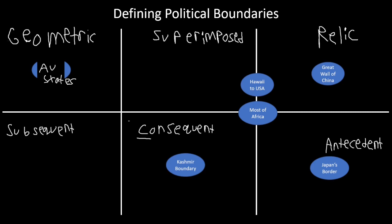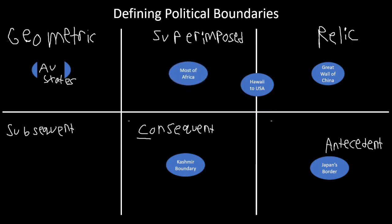Most of Africa's boundaries were put in place by Europe or have influence from Europe's Berlin Conference, so those boundaries are superimposed because they came from outside forces. Finally, Hawaii to the United States — Hawaii was not always part of the United States. That occurred with the evolution of the cultural landscape, making it a subsequent boundary.